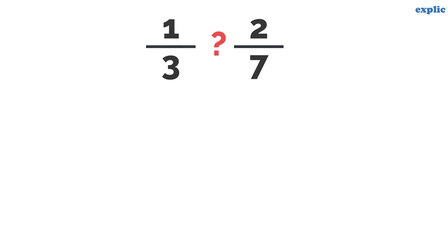How about 1 by 3 and 2 by 7? Let's check. Multiply 1 and 7. The product is 7. Then multiply 2 and 3. The product is 6. Cross products are not equal. Hence, 1 by 3 and 2 by 7 are not equivalent fractions.